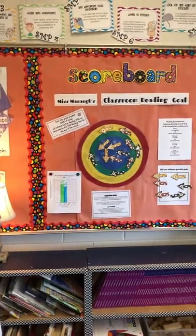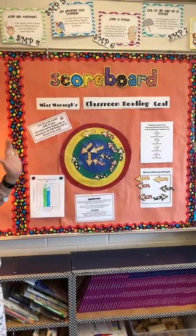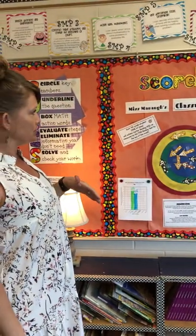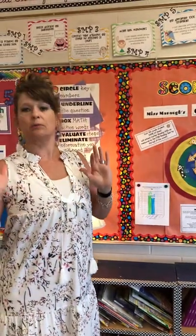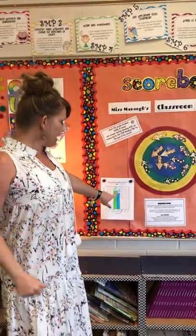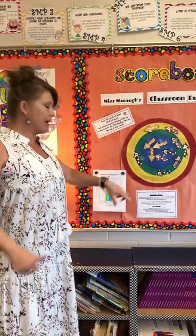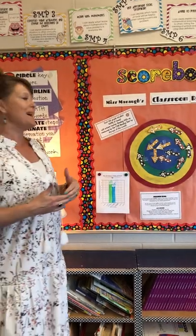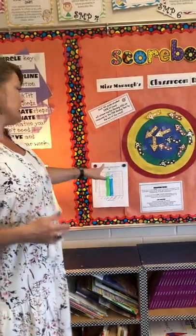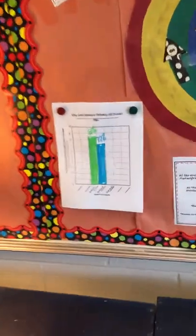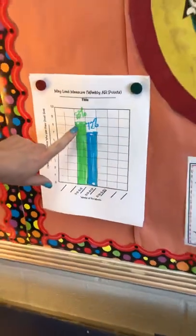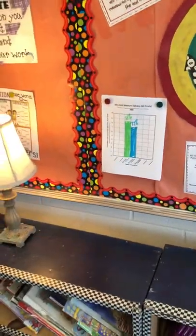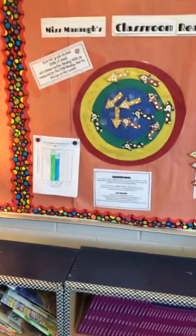This part of our school-wide WIG program is the classroom scoreboard. This information comes from each student's individual WIG. Every Friday, you take that data and figure out what percentage of your class met their lead measure — which is whether they got their points for the week — and then you graph that here.